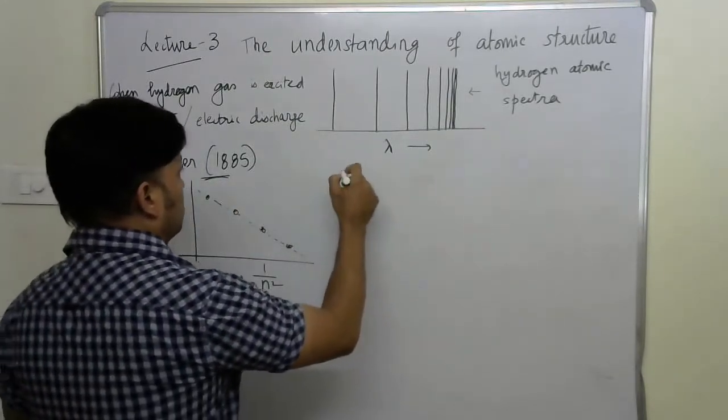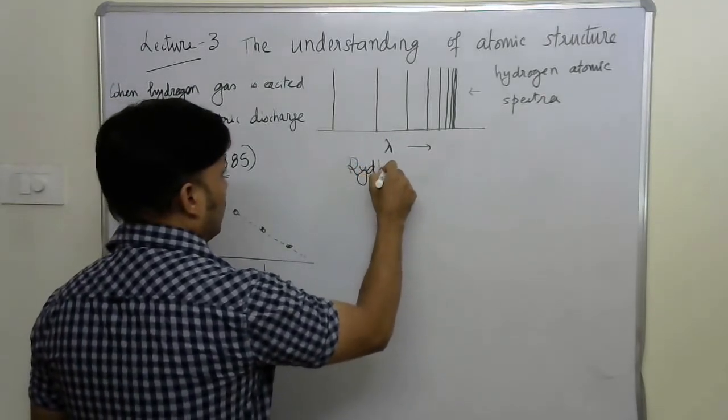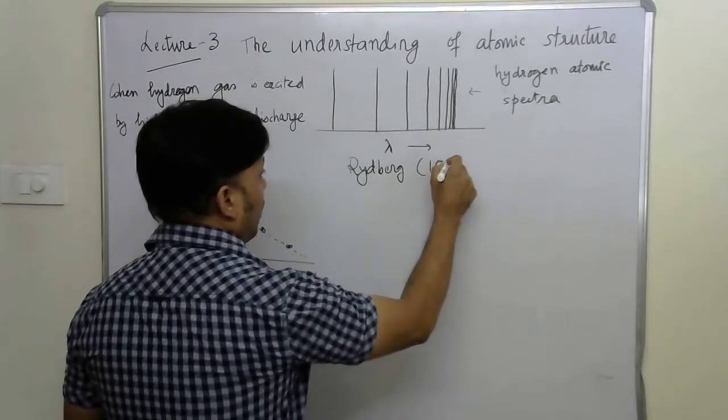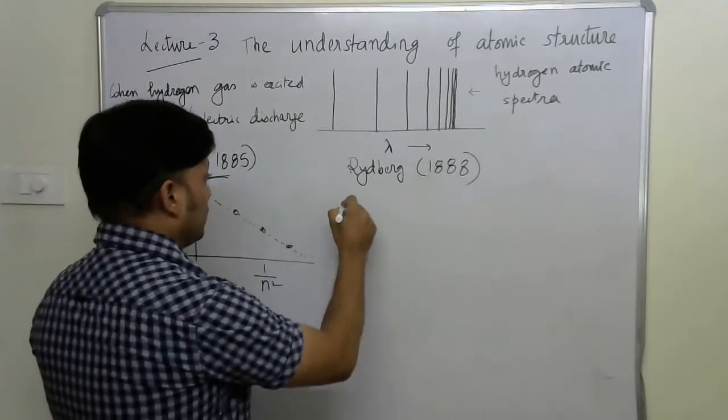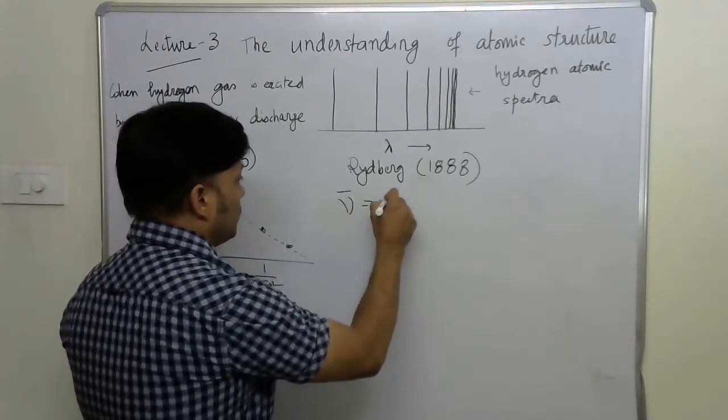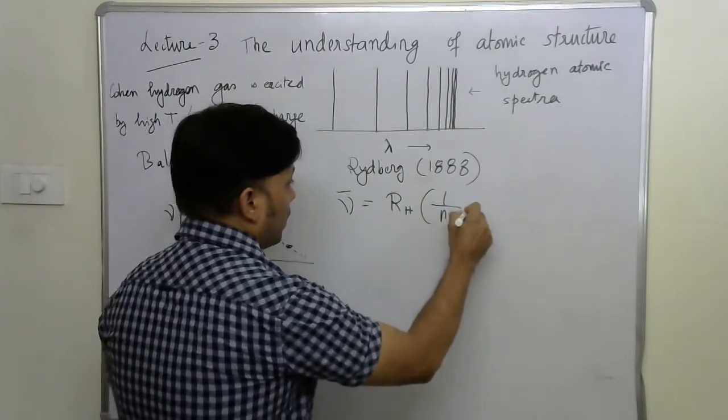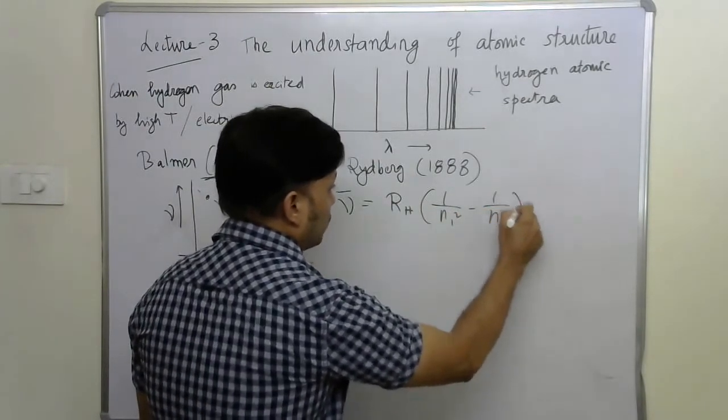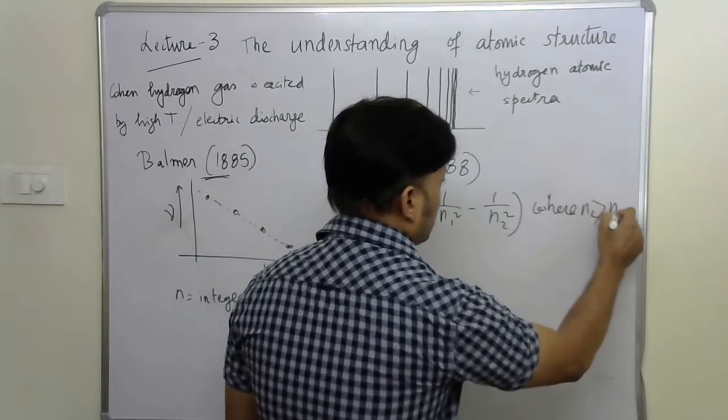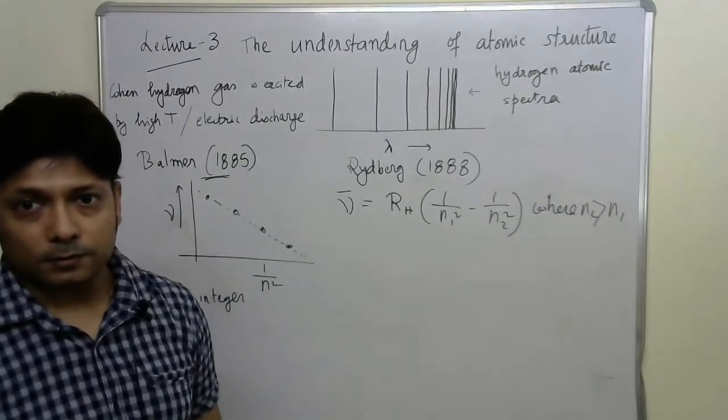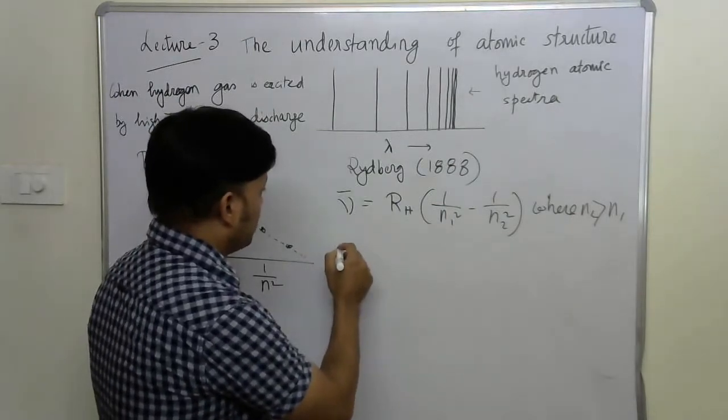Whatever Balmer observed, it was much more generalized by Rydberg in the year 1888. He gave a much more generalized empirical equation. He started with the wave number. His equation was like that: mu bar is equal to Rh times 1 over n1 square minus 1 over n2 square, where n2 is greater than n1. And of course, mu bar is in wave number.